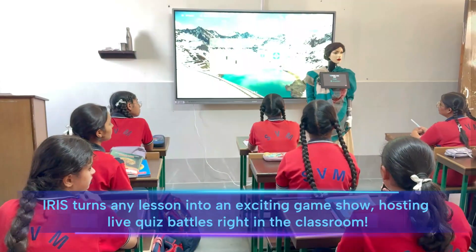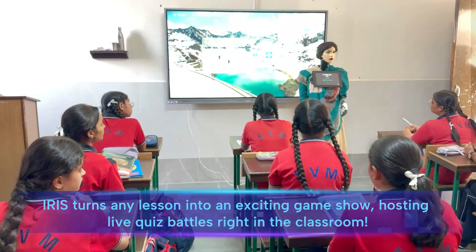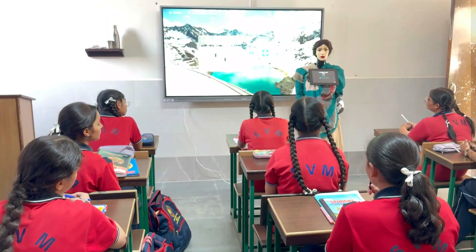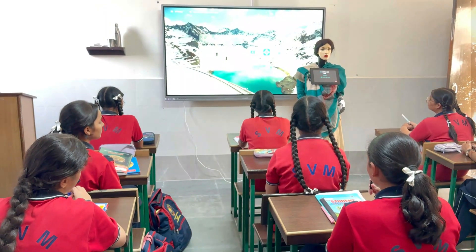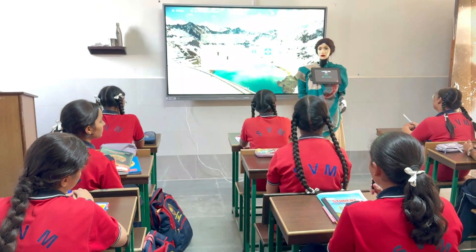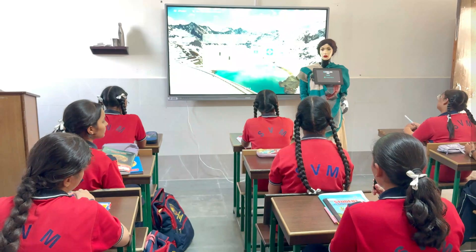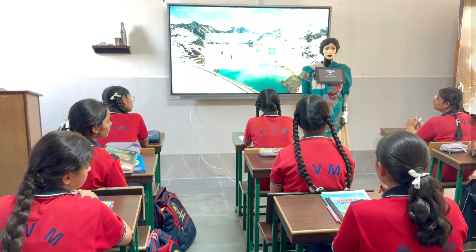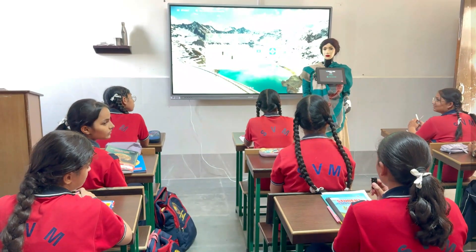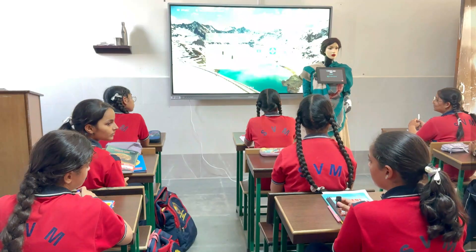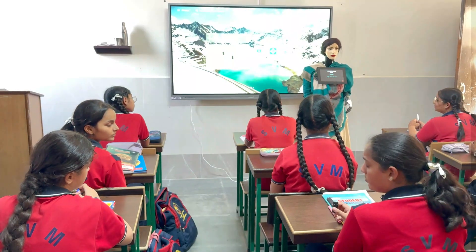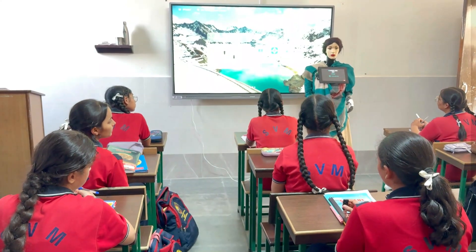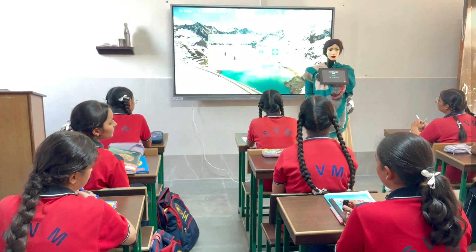Sure, the question for team A is: what is the relationship between the focal length and the radius of curvature of a spherical mirror? R equals 2F. Good job! That's correct. The radius of curvature R is equal to twice the focal length F, or R equals 2F.